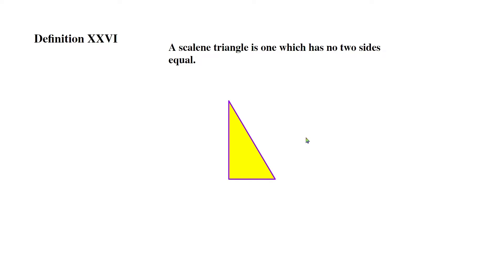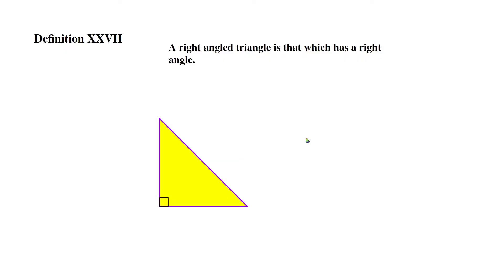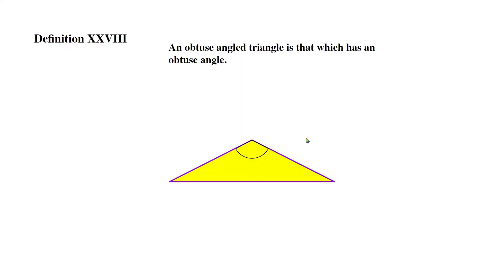Definition 26: a scalene triangle is one which has no two sides equal. So in a triangle if no sides are equal to each other, the name we give for it is a scalene triangle. Definition 27: a right angle triangle is that which has a right angle. If a triangle has a right angle, the name for it is a right triangle.